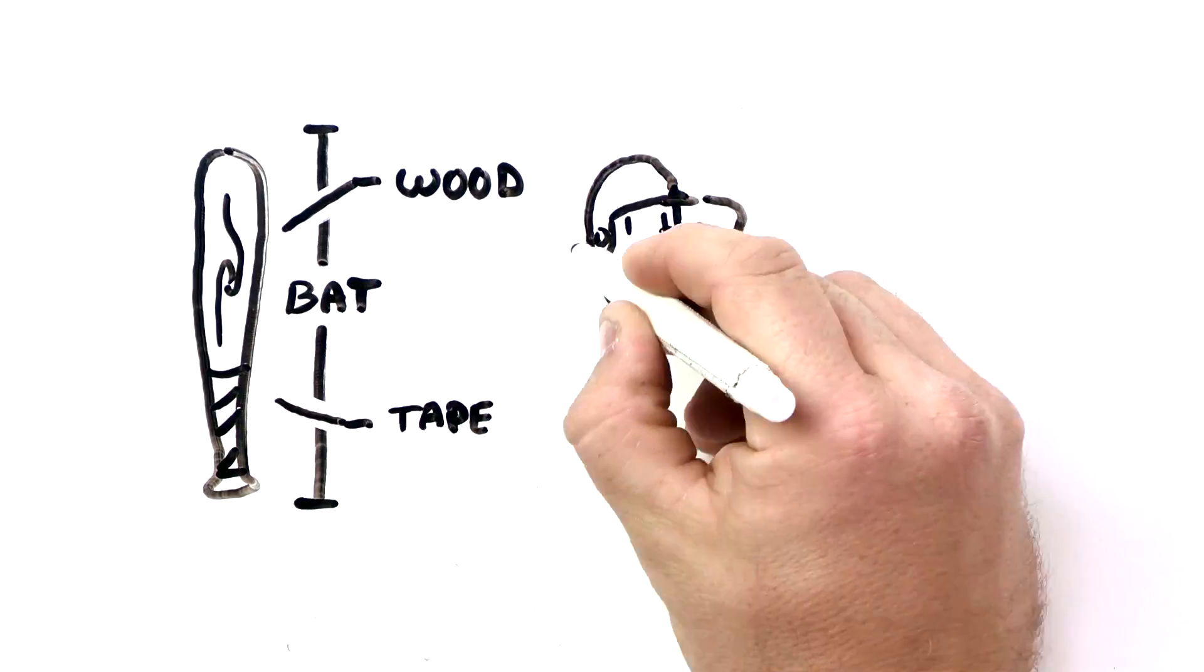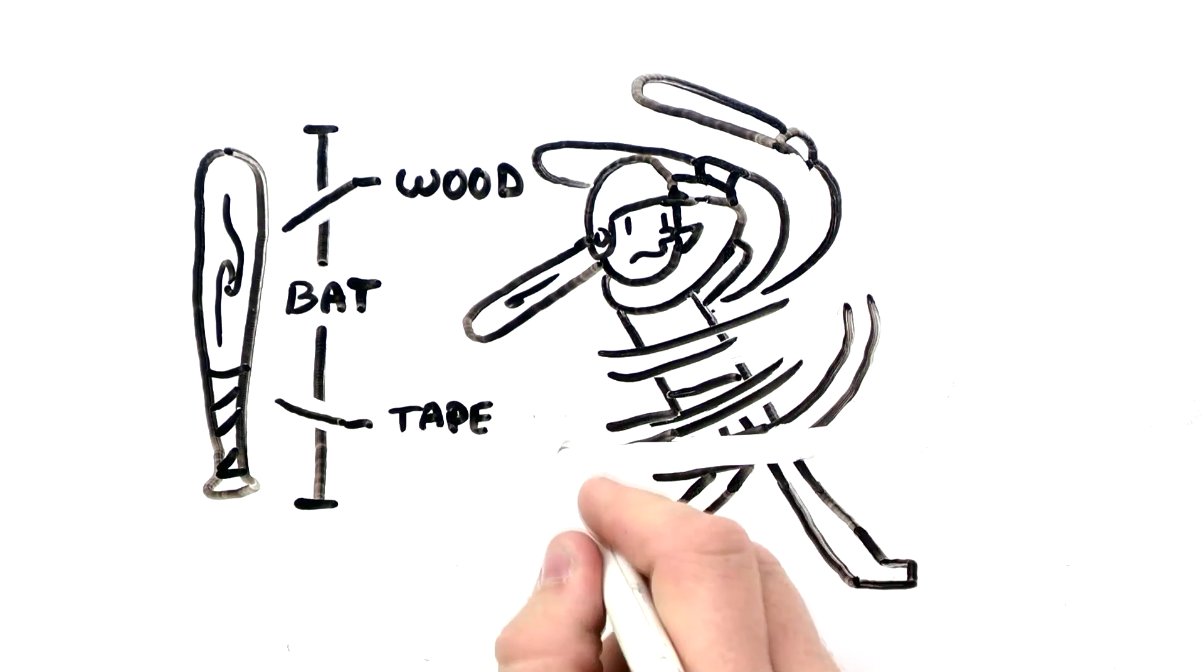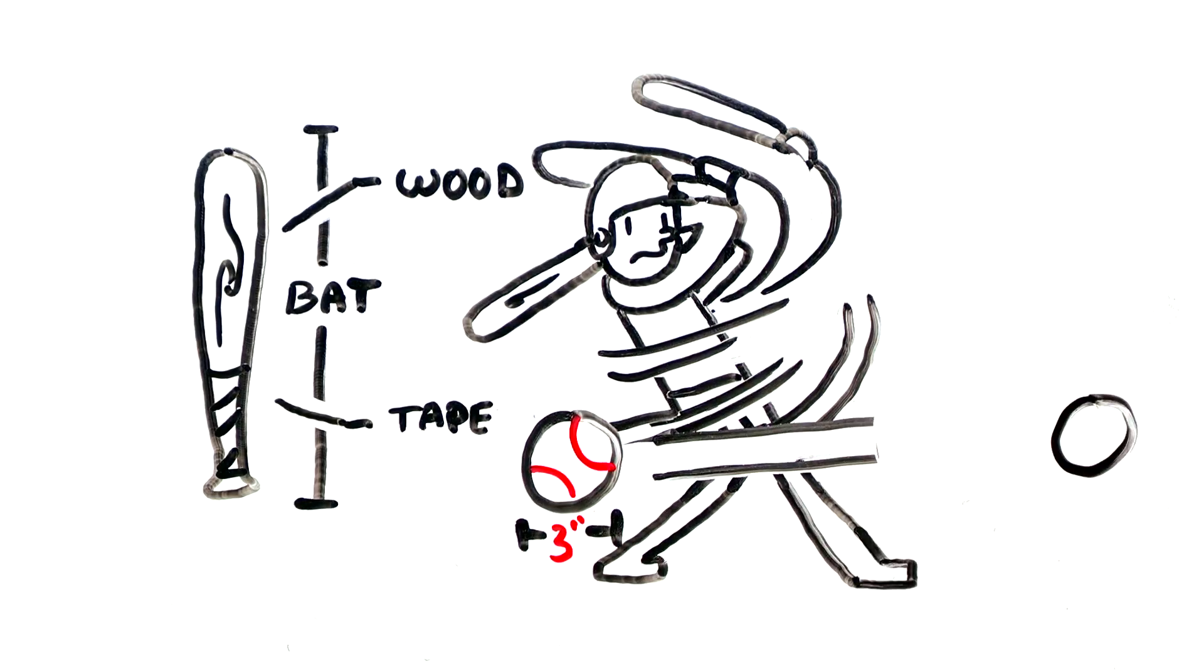It's called at bat because of the cylindrical piece of wood the players use to hit the ball. The thin bat begins to frustrate the batter as a three inch diameter ball with red stitching blows right past him.